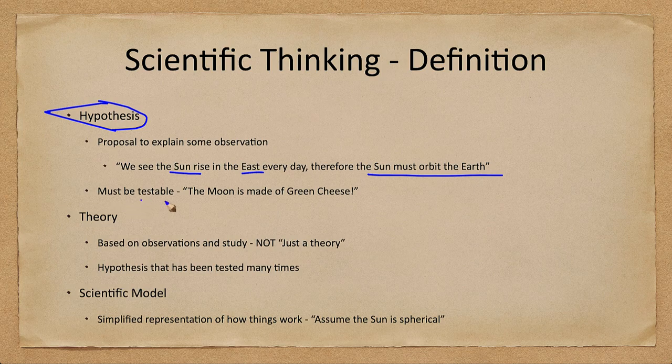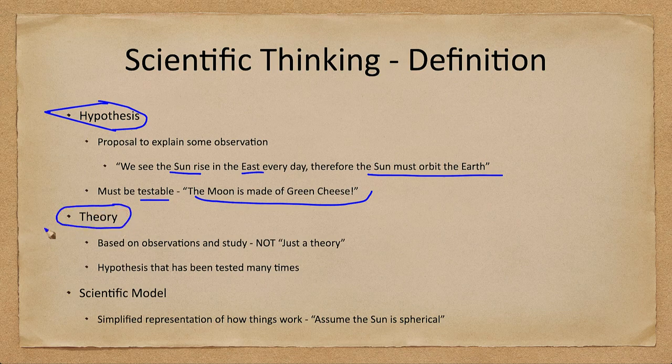A hypothesis must be testable. For example, saying the moon is made of green cheese is a valid hypothesis because you can take samples of the moon and find out what it is made of — it is testable. A hypothesis differs from a theory in that a theory is a hypothesis that has been tested many, many times and has stood the test of time. So when we start calling something a theory, it has been very well tested — a hypothesis is the beginning and a theory is the next step.